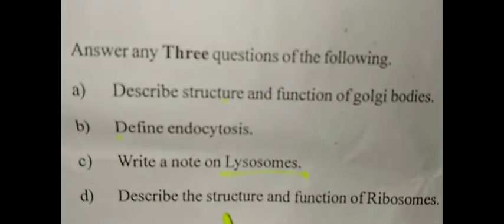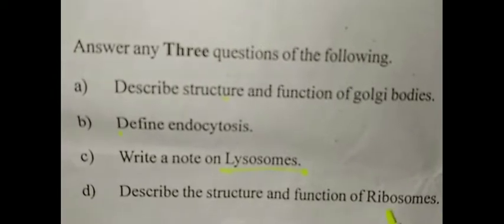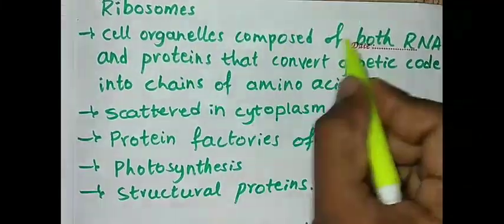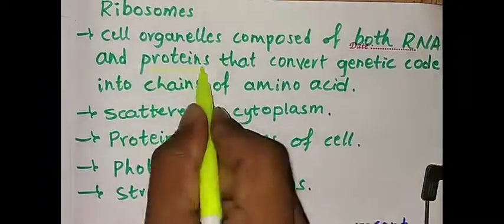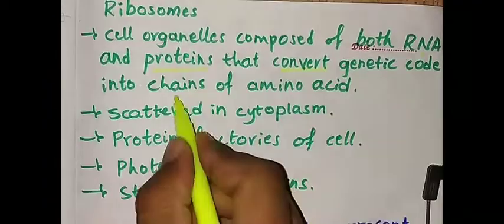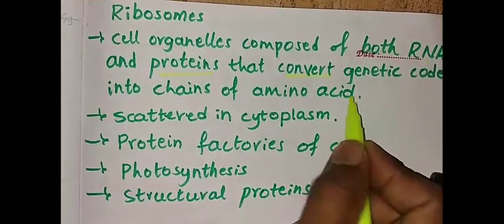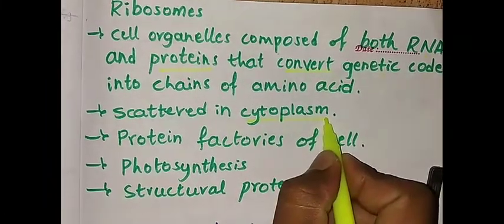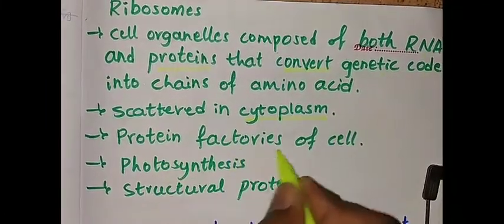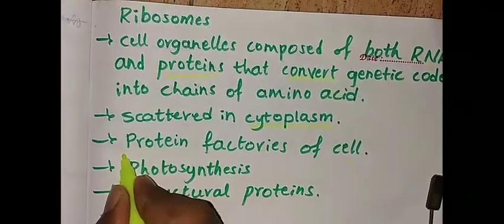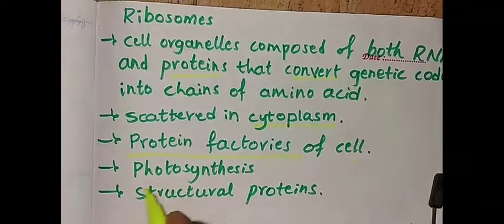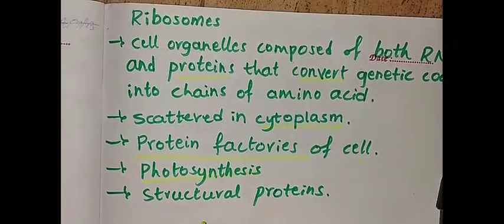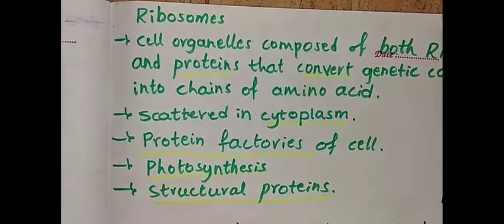The next question is describe the structure and function of ribosomes. Ribosomes are cell organelles composed of both RNA and proteins that convert genetic code into chains of amino acids. Ribosomes are scattered in the cytoplasm of the cell. These are protein factories of the cell. Ribosomes help in photosynthesis and help to form structural proteins.